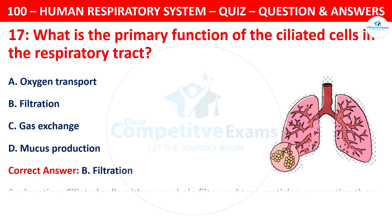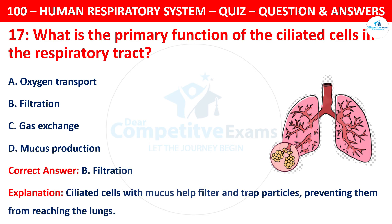Ciliated cells, together with mucus, help to filter and trap particles, preventing them from reaching the lungs.